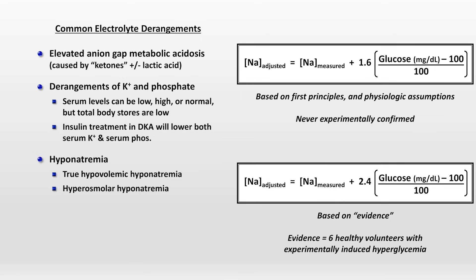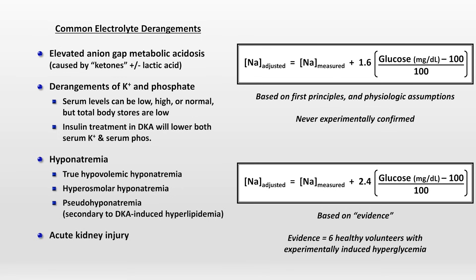In addition to these two forms of hyponatremia, patients can also have pseudo-hyponatremia, which is a lab artifact secondary to DKA-induced hyperlipidemia. Acute kidney injury is also common in DKA, which is usually secondary to dehydration and corrects rapidly with IV fluids.